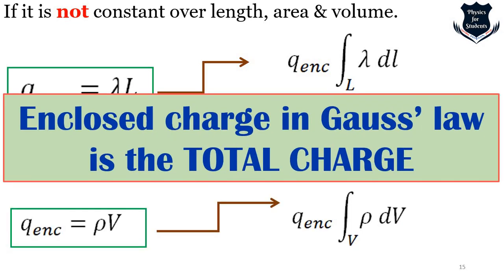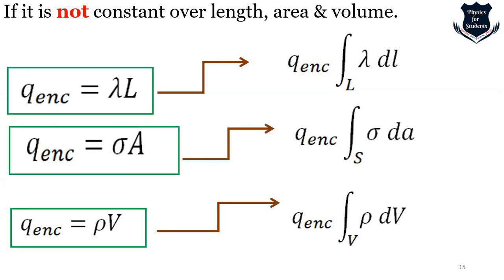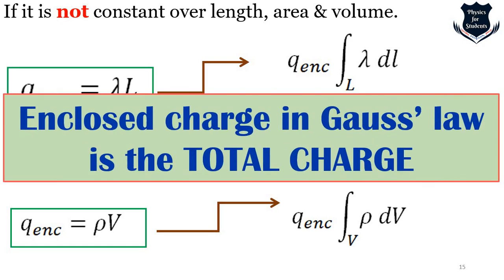The enclosed charge in Gauss's law represents the total charge. Going back, when these quantities are constant it is straightforward multiplication. Otherwise, as in the surface integrals discussed in earlier videos, integration techniques are used. This covers what is meant by enclosed charge in Gauss's law — whether it is linear, area, or volume charge, with integration for non-uniform distributions.